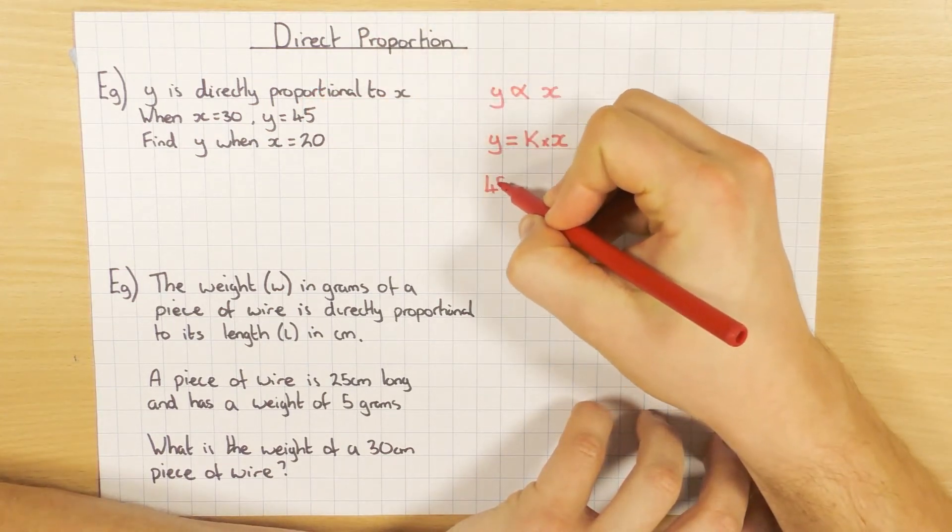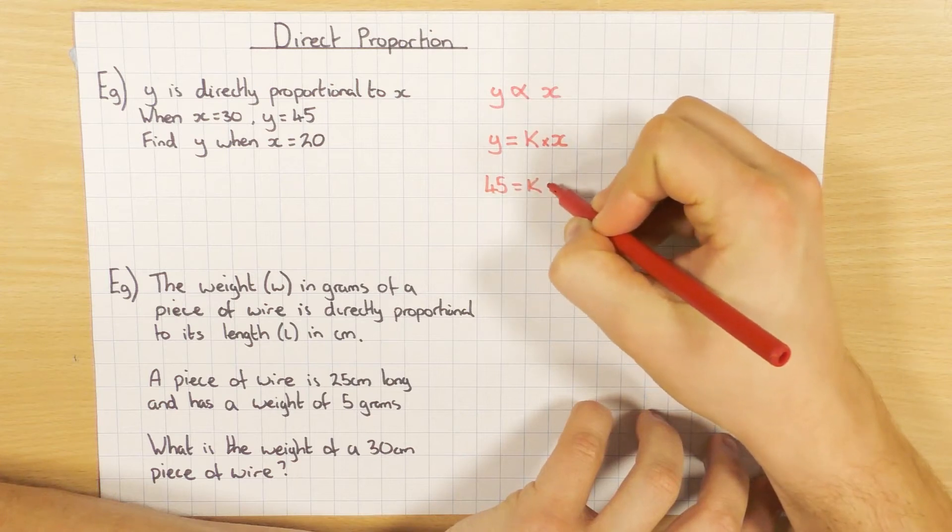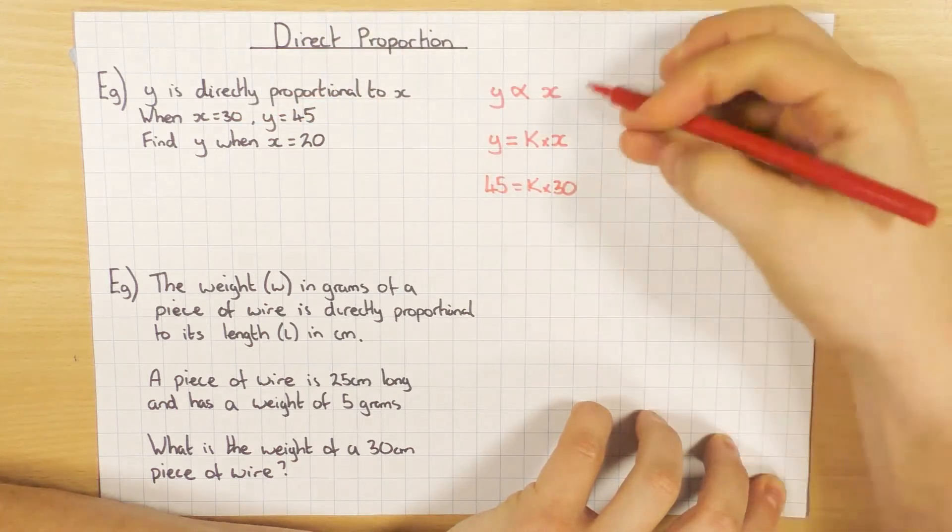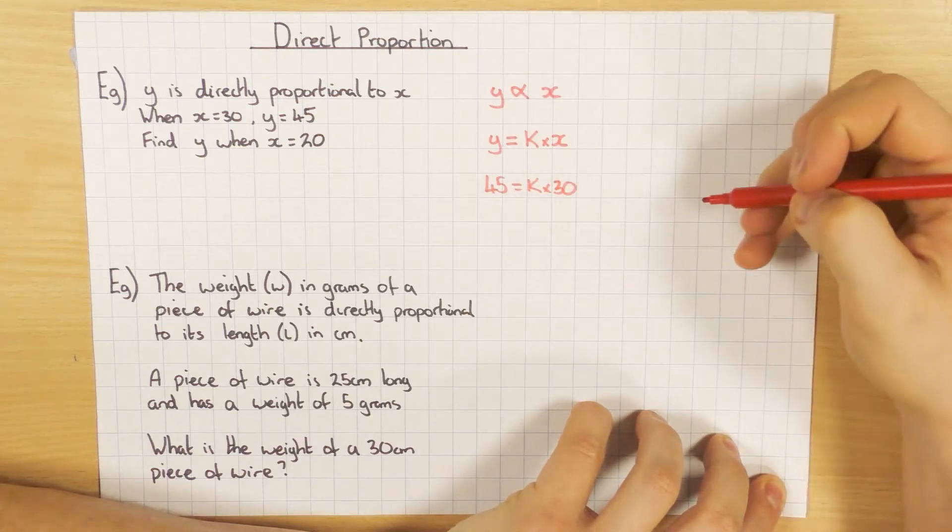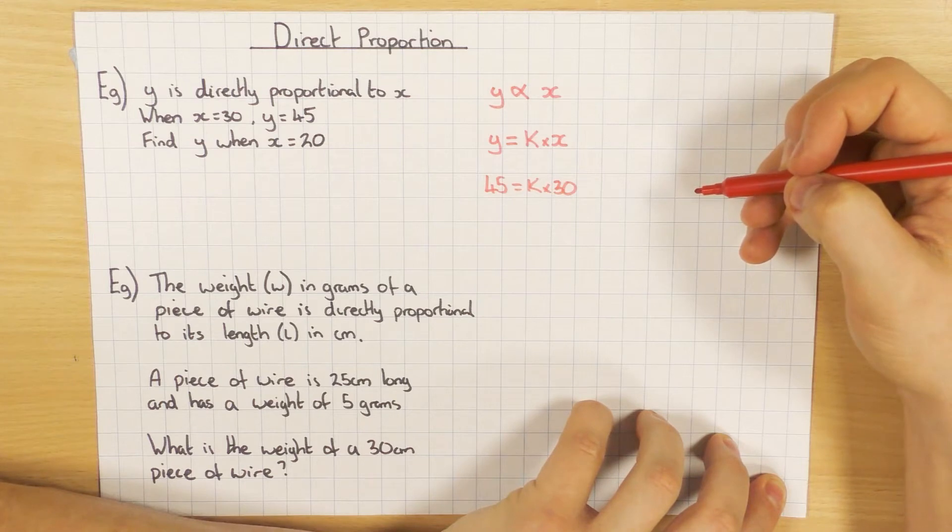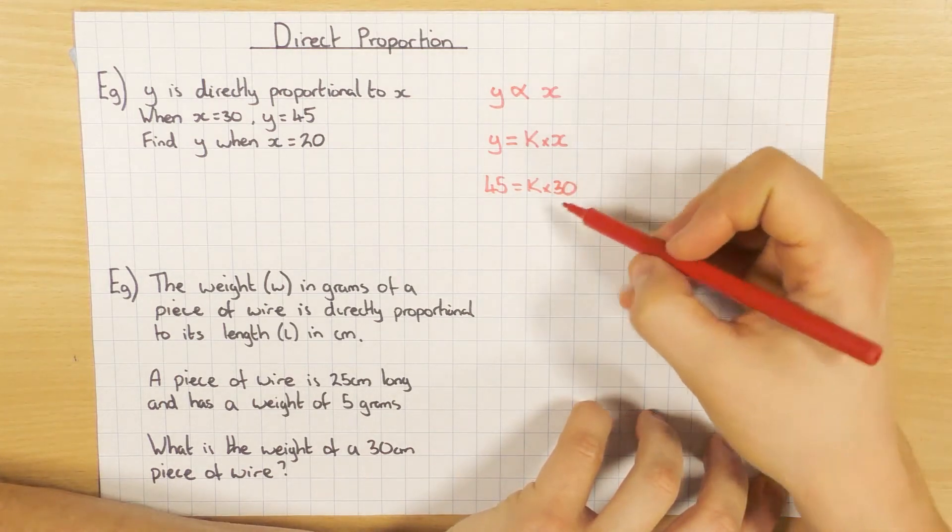So y is 45, and that equals k times x, and then x is 30. So 45 equals k times 30. Then it's just a little bit of rearranging, so either using the balance method or flow chart. I'm going to use the balance method in this particular case.